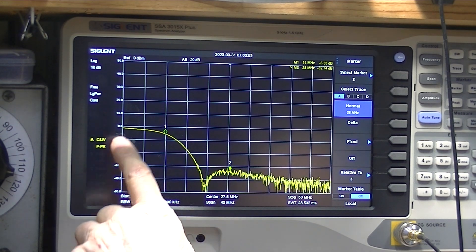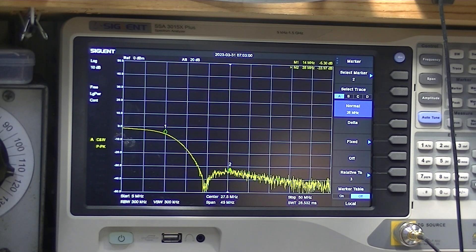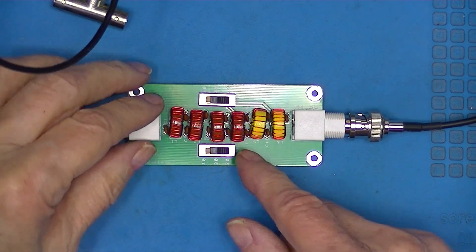Here's 5 megahertz. Marker 1 is down to minus 4, minus 5 decibels. I'll go to 30 meters, which should be 10 megahertz.